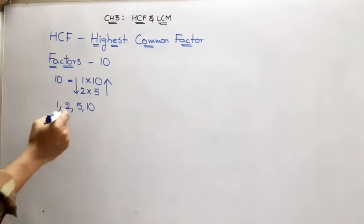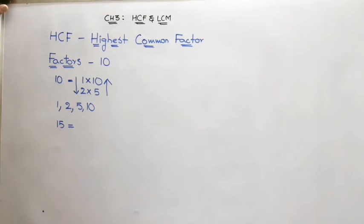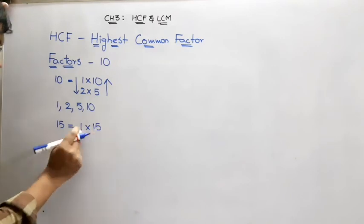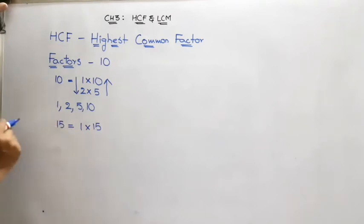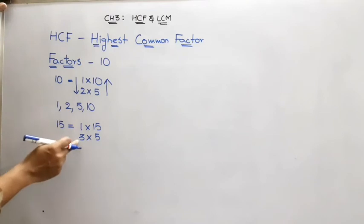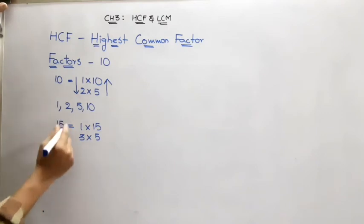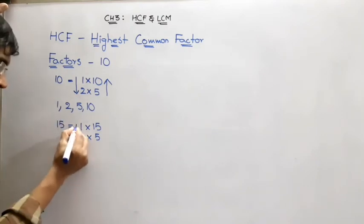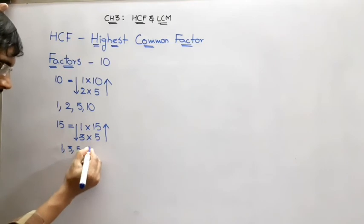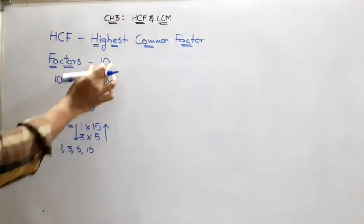Now I want to take another number — for example, 15. Always 1 comes first: 1×15 gives 15. In the 2 table we can't get 15. In the 3 table, 3×5 gives 15. After that, 5×3 is the reverse of this, and 15×1 again. So the factors of 15 are 1, 3, 5, and 15.